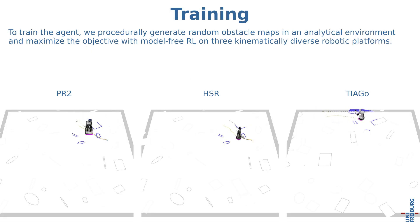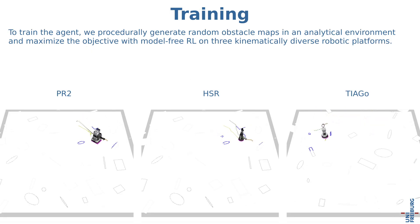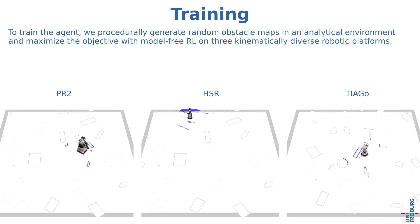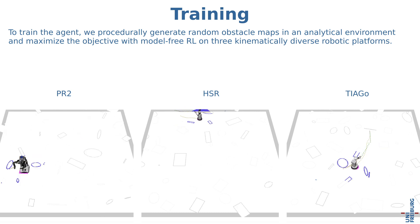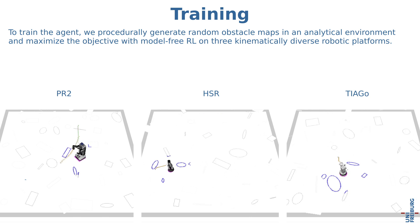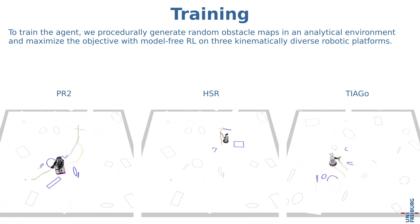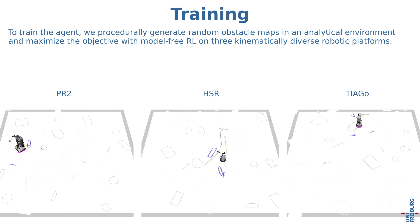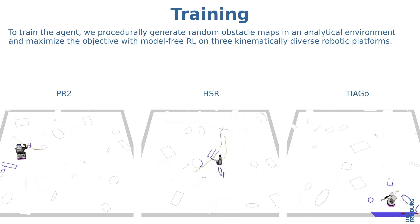To train the agent, we procedurally generate random obstacle maps in an analytical environment and maximize the objective with Model-free RL on three kinematically diverse robotic platforms: the PR2, HSR and Tiago.